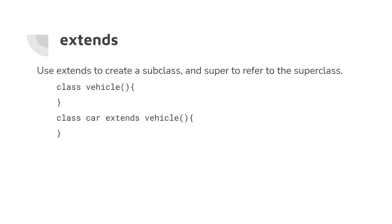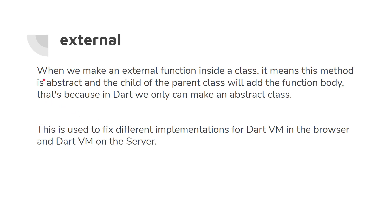The 'external' keyword: when we make an external function inside a class, it means the method is abstract and the child of the parent class will add the function body. In Dart we can only make an abstract class — the external keyword is used to fix different implementations for Dart VM, in the browser, and on the server.